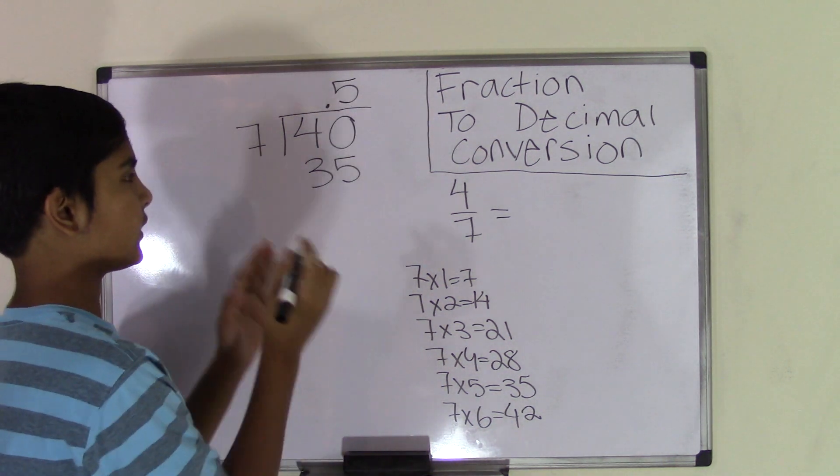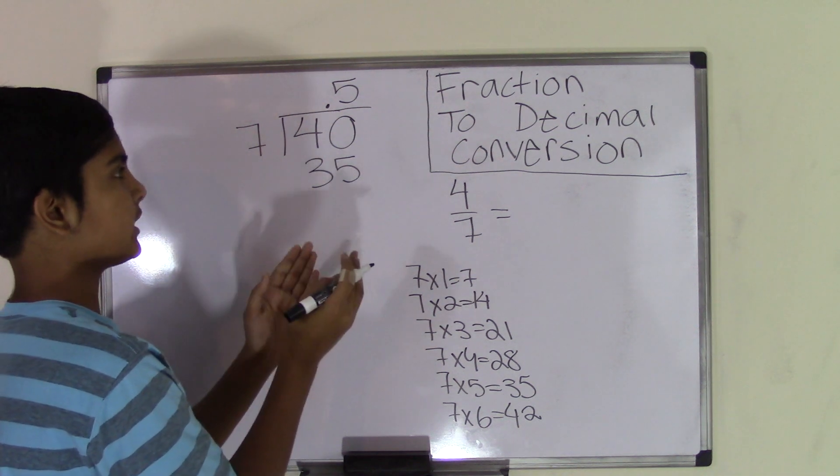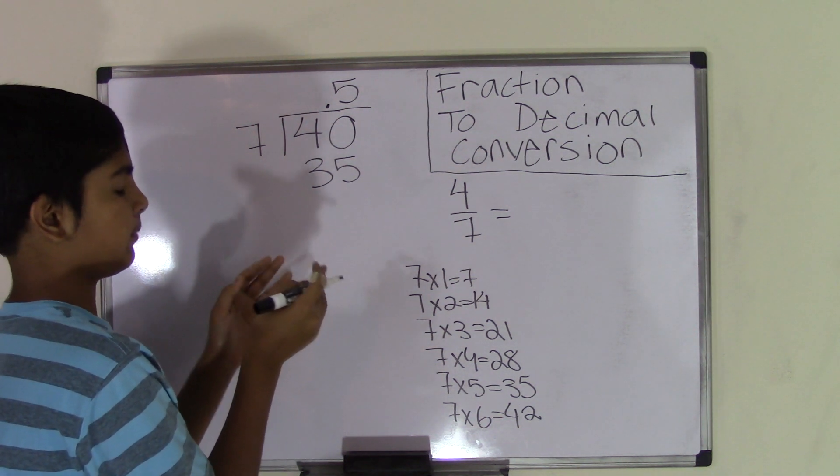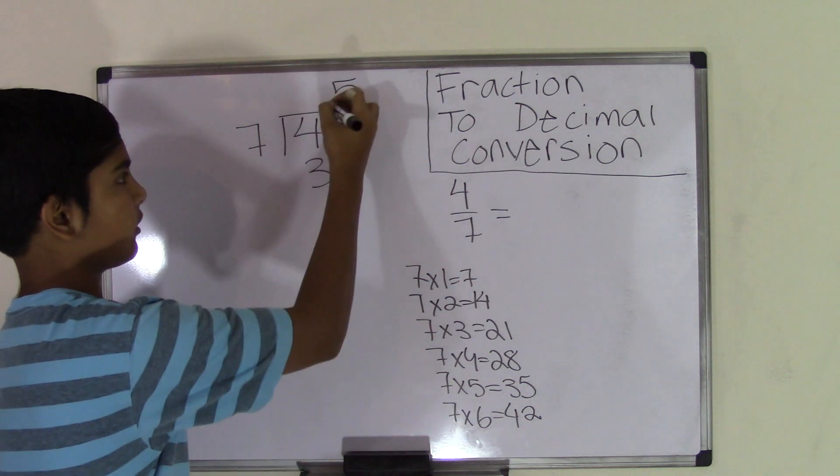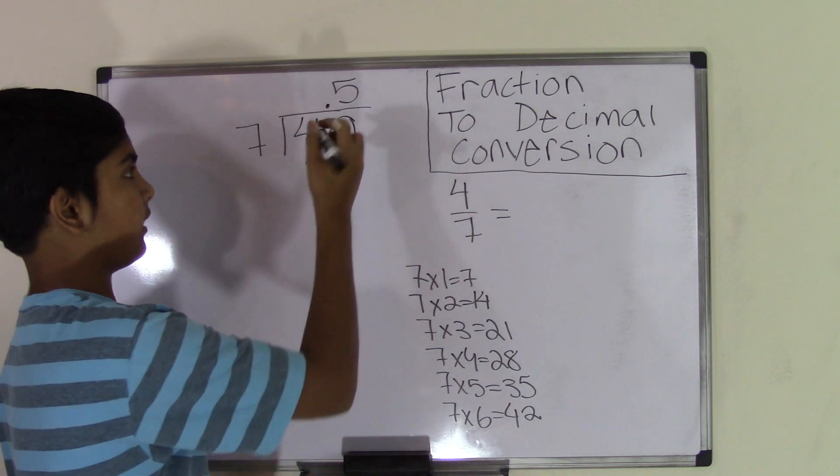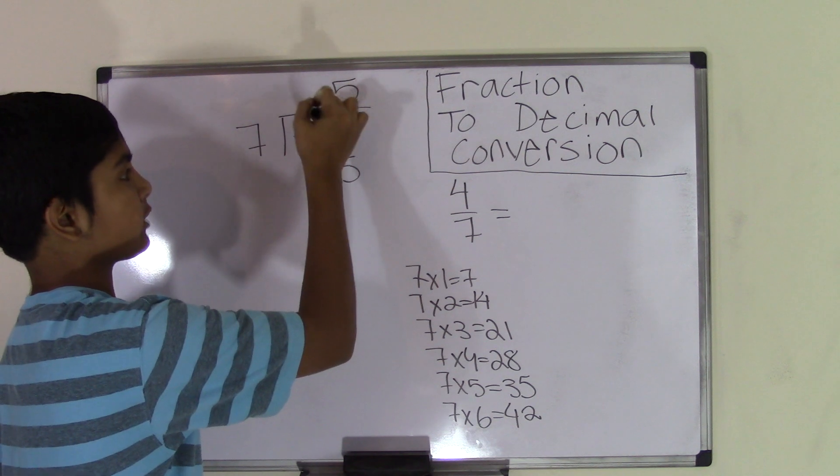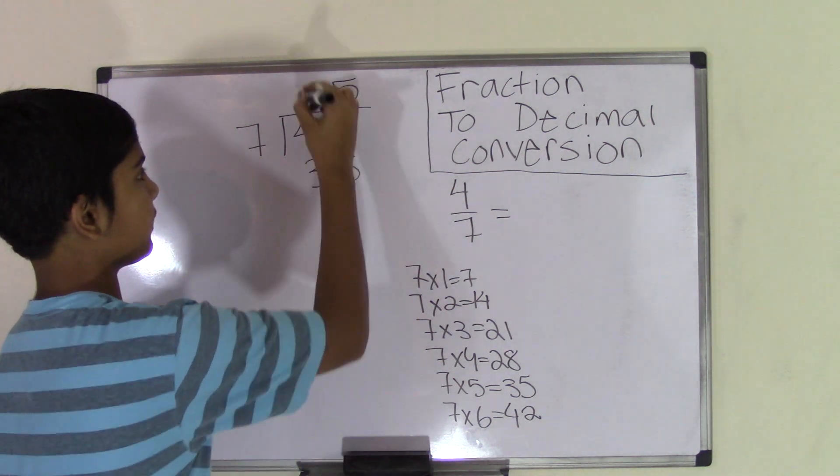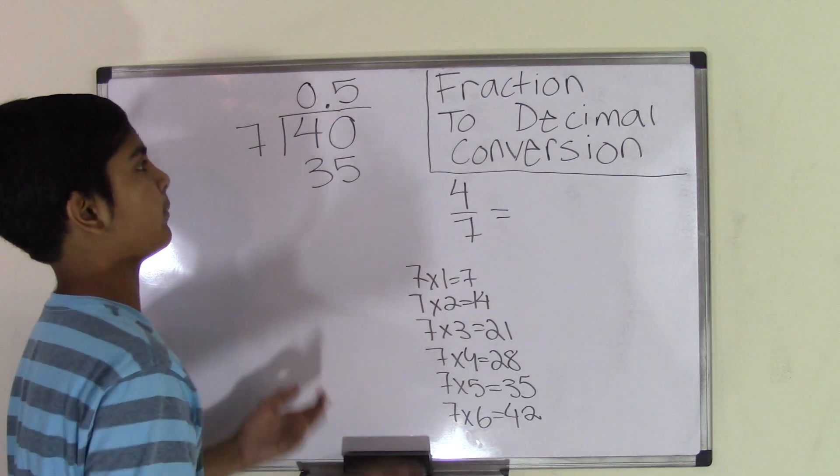So remember, put the first quotient after the decimal point, not before, because if you put it before the decimal point, it's going to become a whole number, and we don't want that. So you can put a zero before the decimal point to remind you of that.